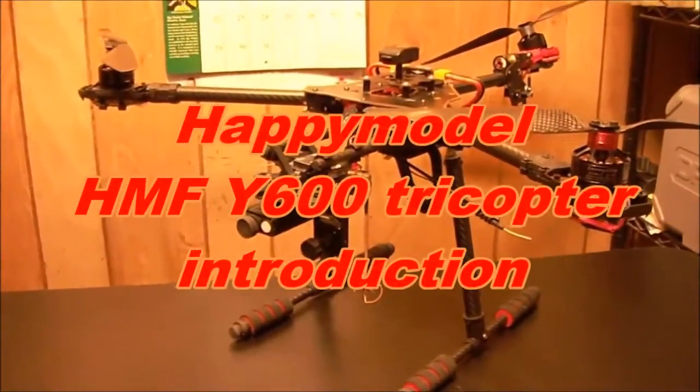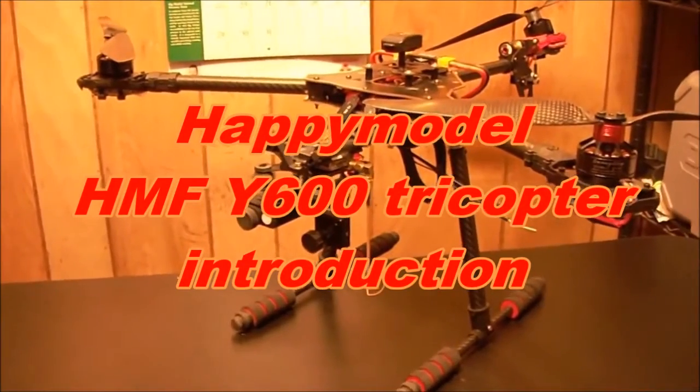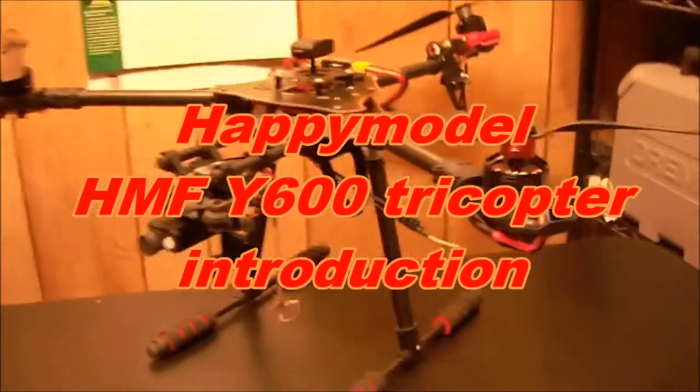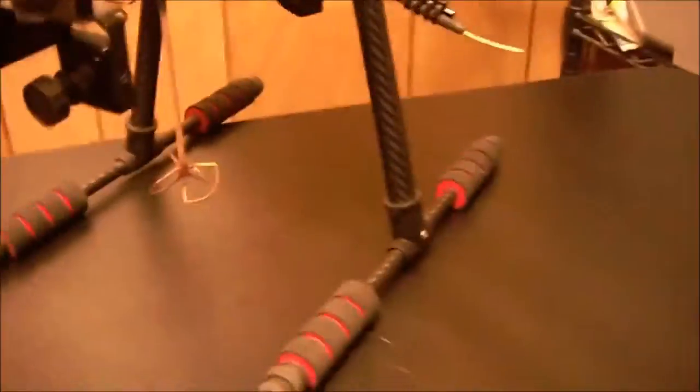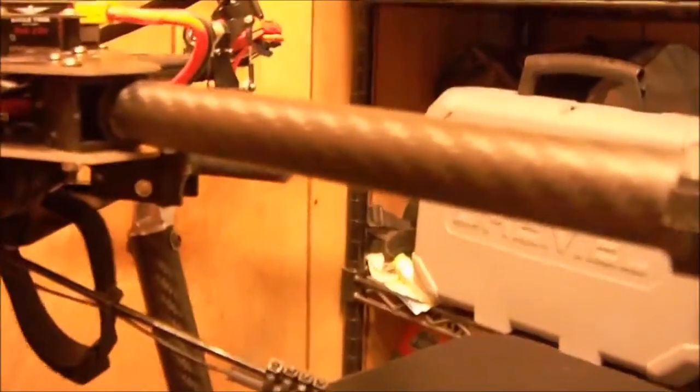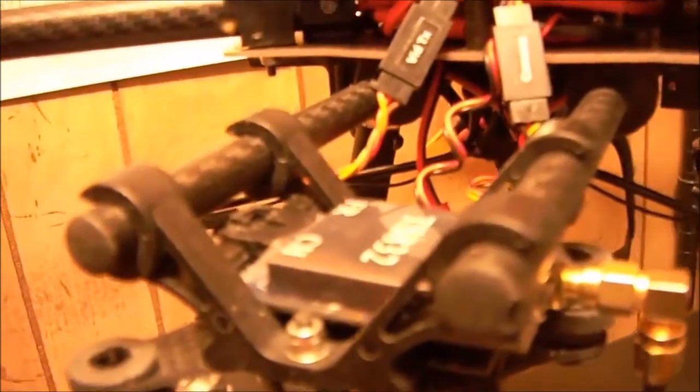This is a Happy Model HMF Y600 Tricopter. Most of the frame, as you can see, is in carbon fiber. Like the propellers, part of the bottom, the arms, and the gear, and the rails that are designed to carry gimbals.